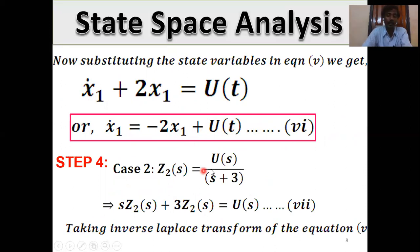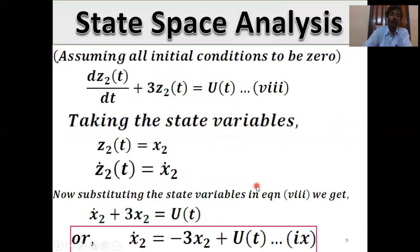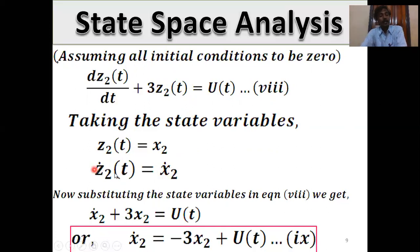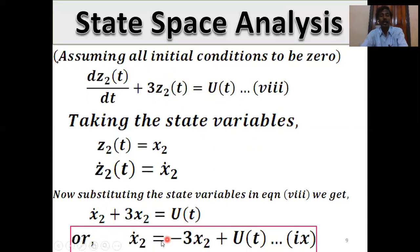Case 2: Z₂(s) = U(s)/(s+3). Cross-multiplying: s·Z₂(s) + 3·Z₂(s) = U(s). Taking inverse Laplace transform: dz₂(t)/dt + 3·z₂(t) = u(t). Put z₂(t) = x₂ as the state variable. Taking differentiation both sides: x₂̇ + 3x₂ = u(t), so x₂̇ = −3x₂ + u(t).